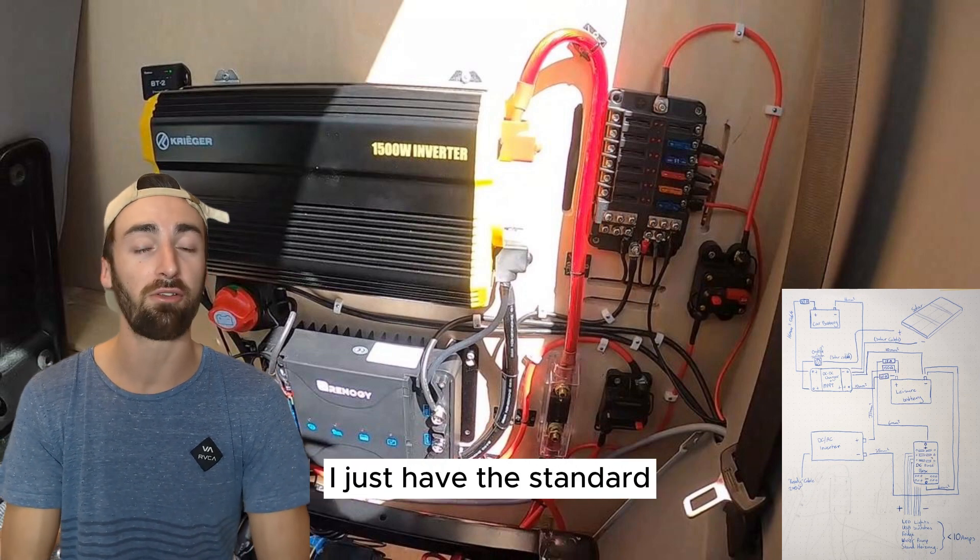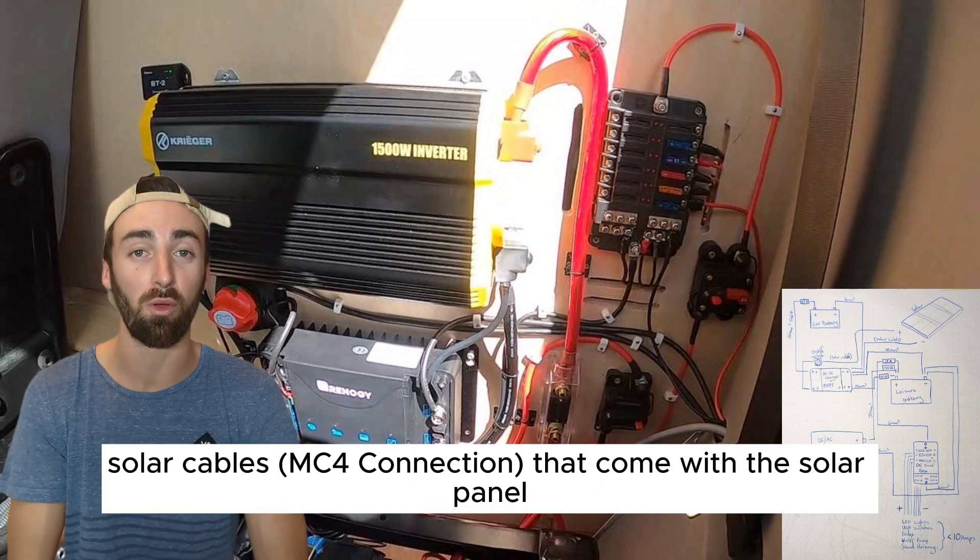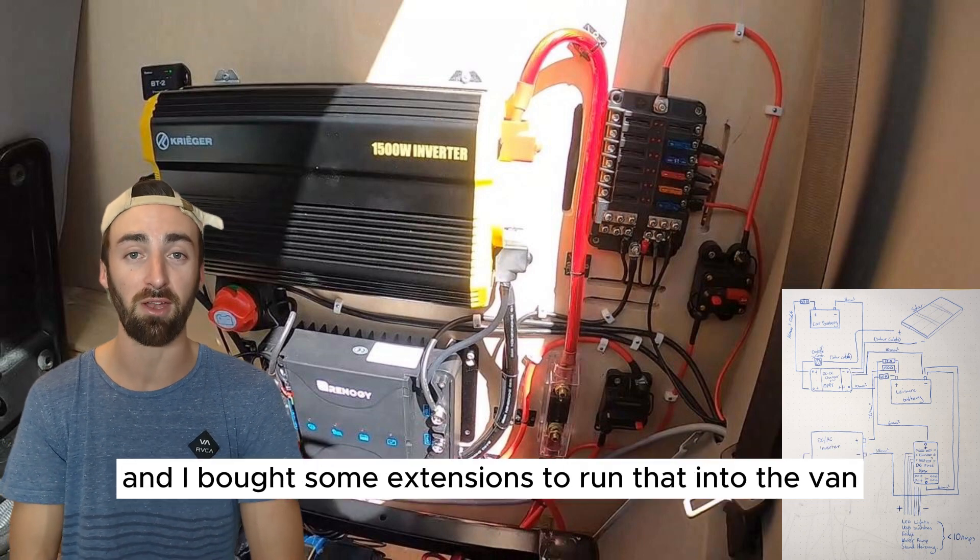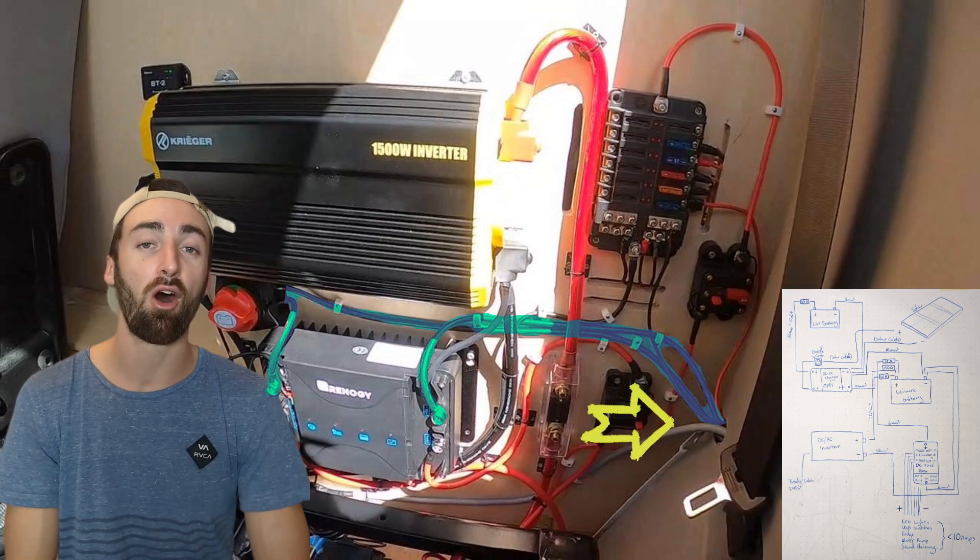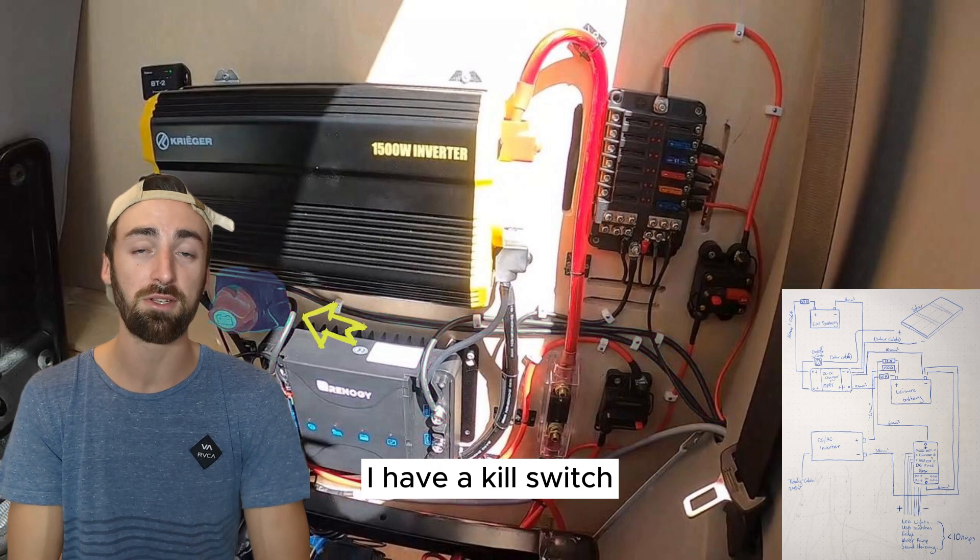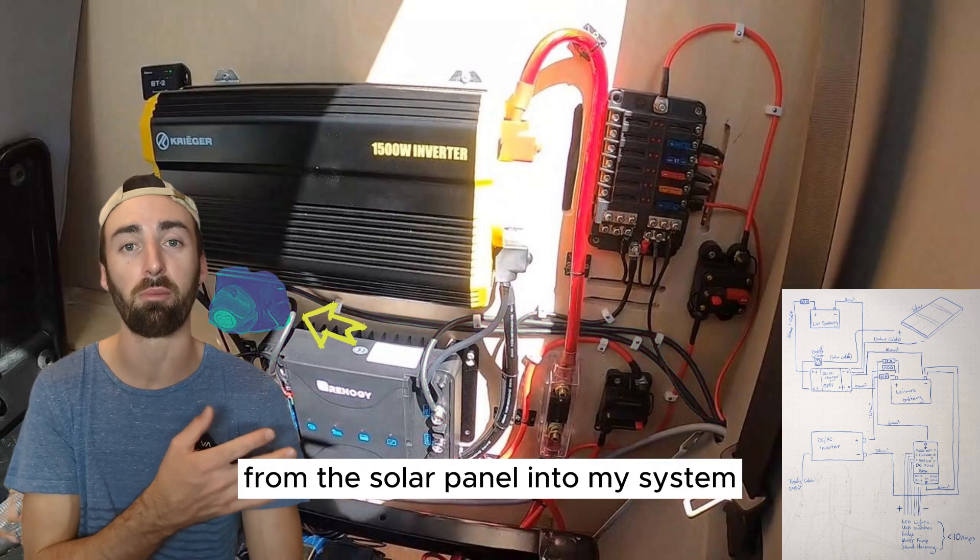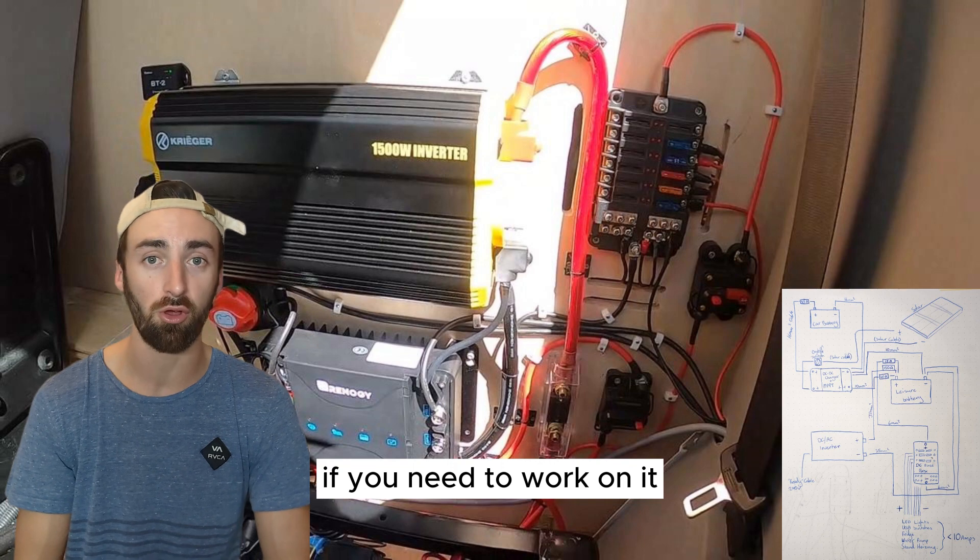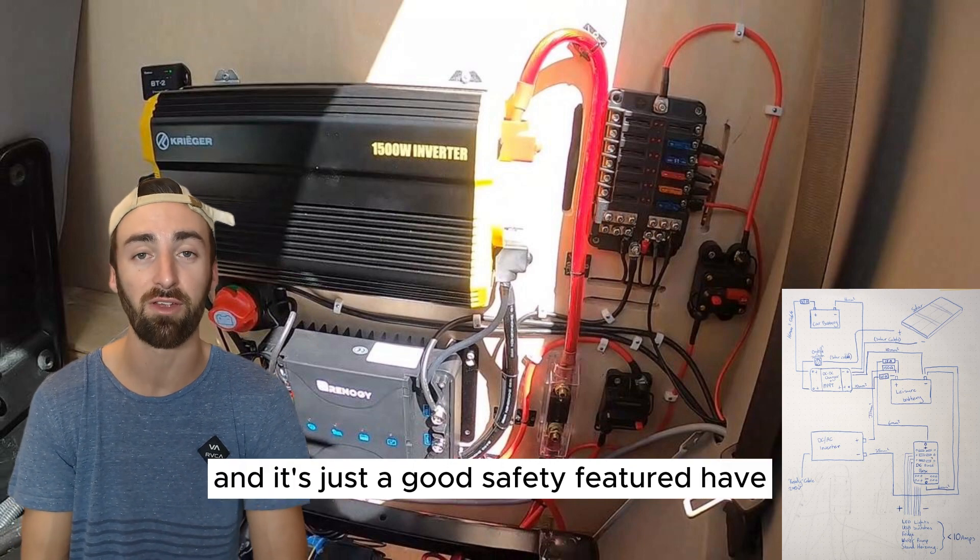Running from the solar panel I just have the standard solar cables that come with the solar panel and I bought some extensions to run that into the van. On the positive line I have a kill switch to be able to stop power from running from the solar panel into my system if you need to work on it and it's just a good safety feature to have.